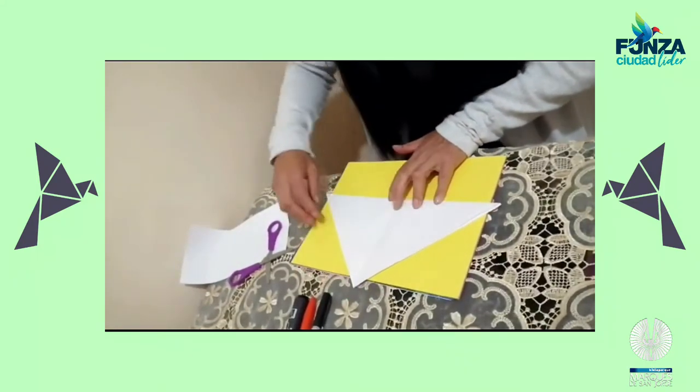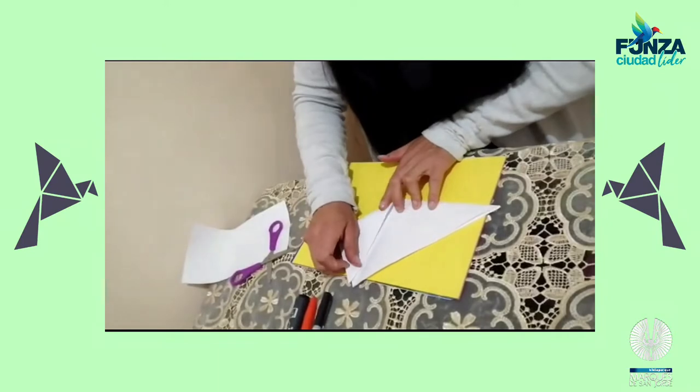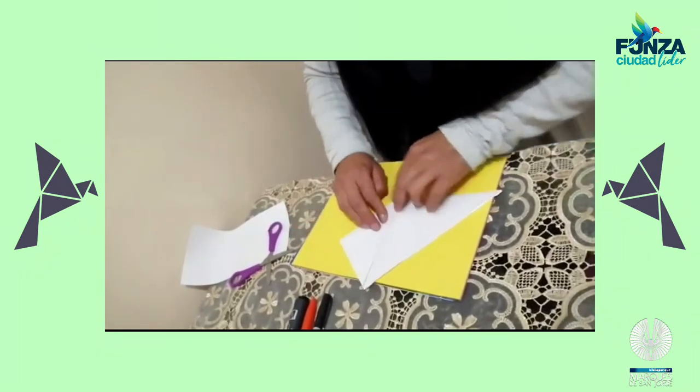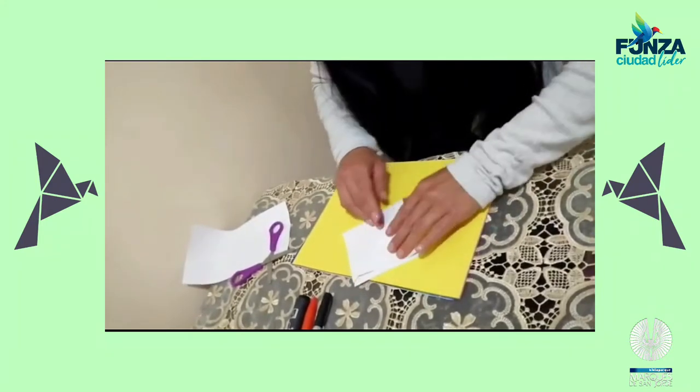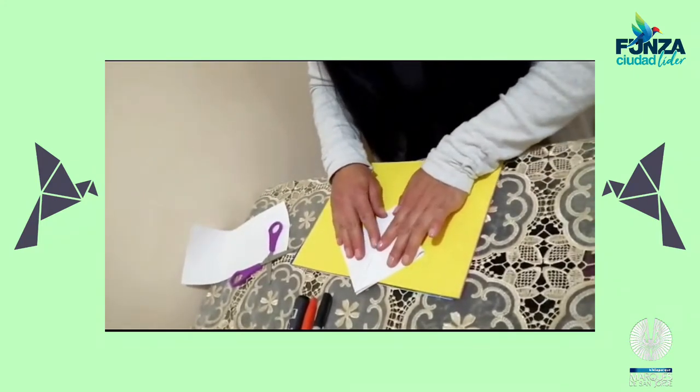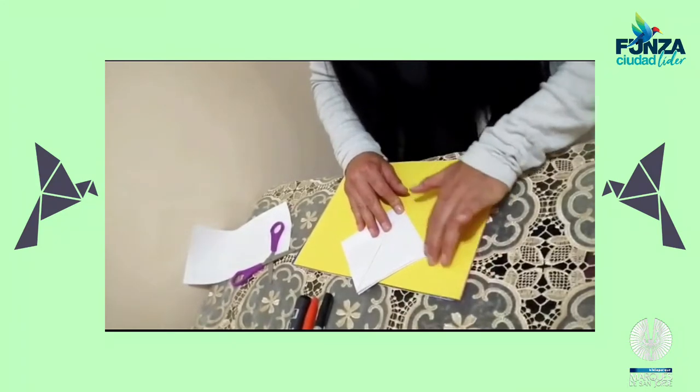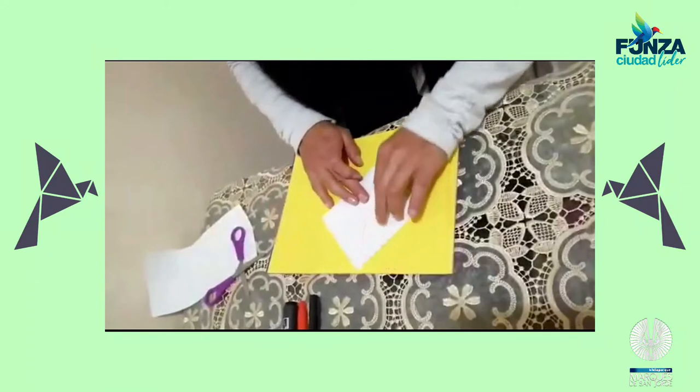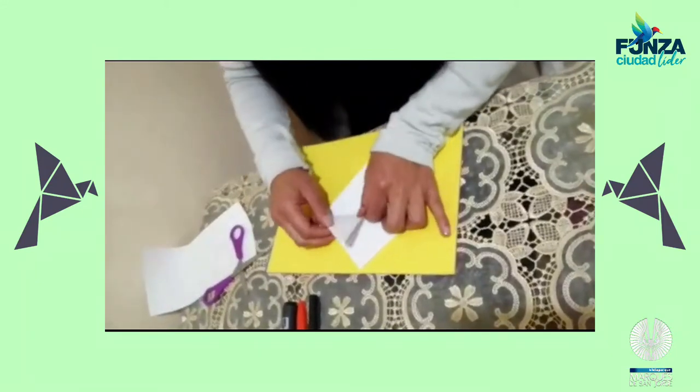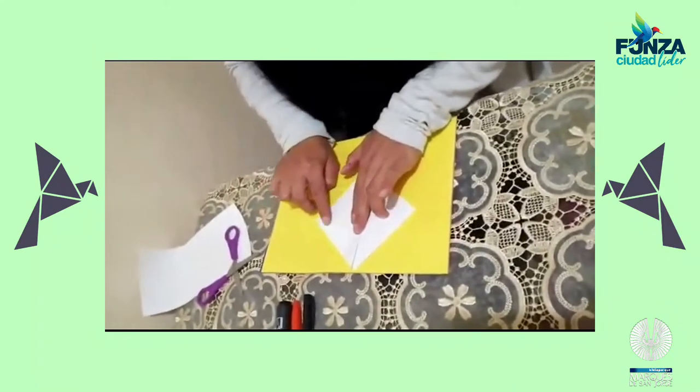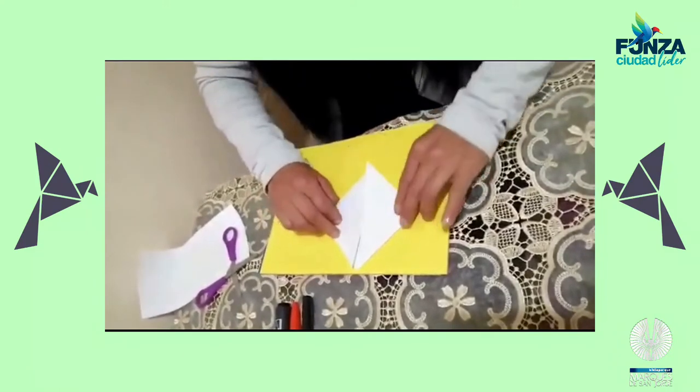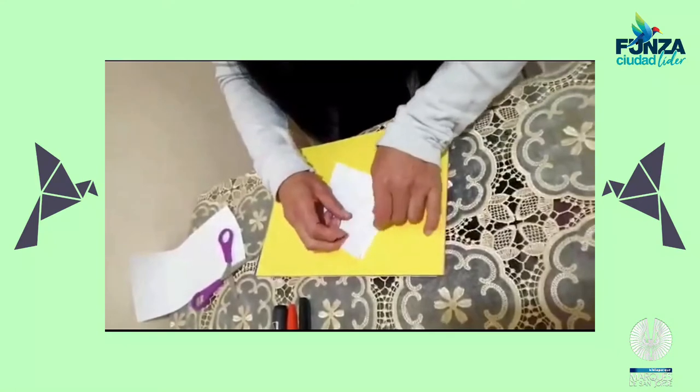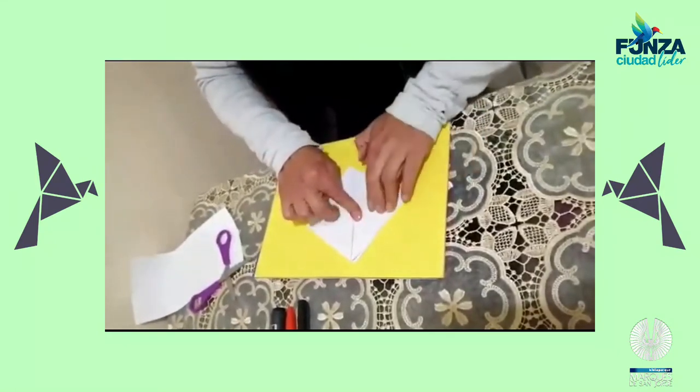Dejamos la parte puntuda hacia arriba y subimos estas puntas formando un triángulo mirando hacia el lado derecho y el otro triángulo hacia el lado izquierdo. Después lo giramos, subimos y formamos un triángulo. Y otro, subimos y formamos el otro triángulo.